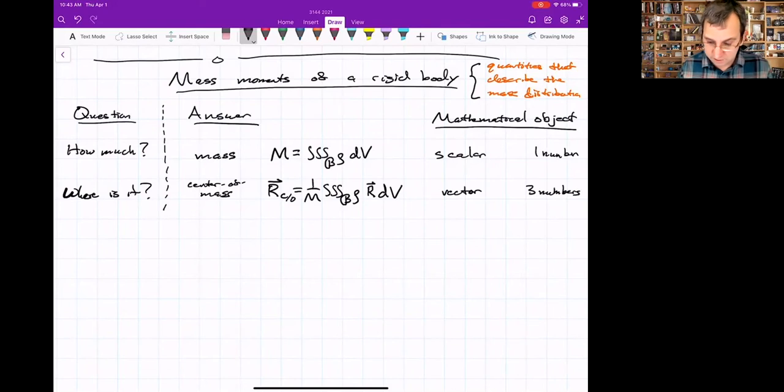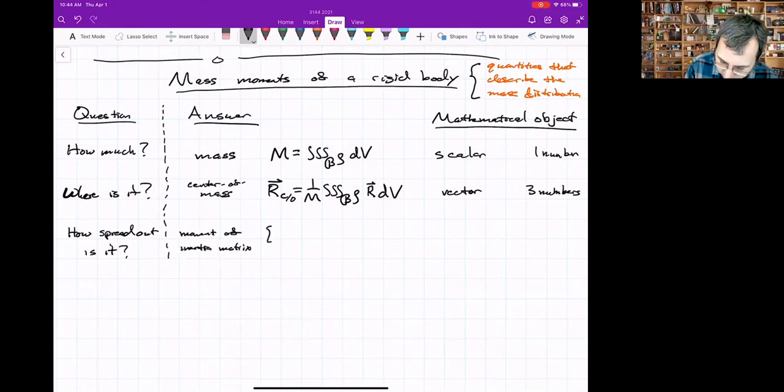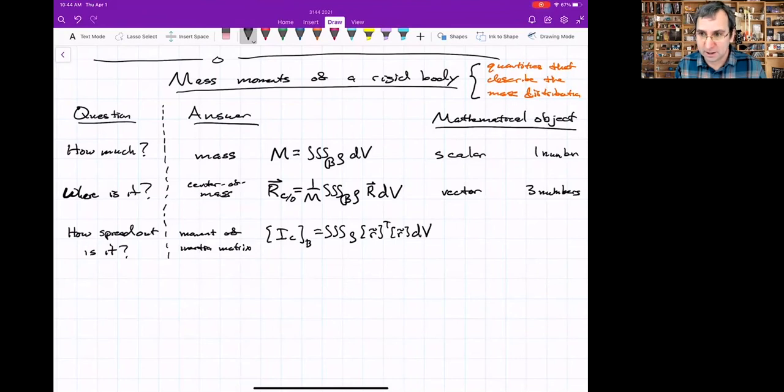The next one is, and what we've kind of focused on today, how spread out is it? That's answered by the moment of inertia matrix, which is that thing. I'm not going to write the whole thing. Actually, it could be written this way. It's the density times R tilde transpose R tilde. We just wrote it in a summary form up above, but since I'm short on space, I'll write it in that compact way.